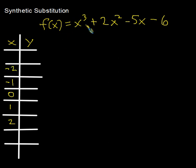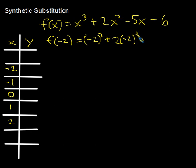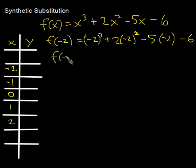First, we'll do this the old-fashioned way. I'd like to evaluate f of negative 2 by plugging negative 2 in: negative 2 cubed, plus 2 times negative 2 squared, minus 5 times negative 2, minus 6. Pause the video and see if you can calculate it yourself.